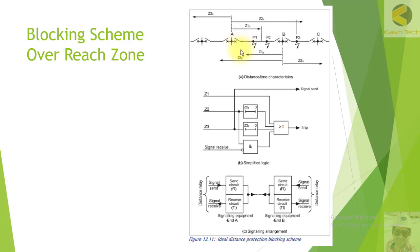For case 3, if the fault is in the reverse direction at F3, the relay at station A will again pick up in zone 2 and start the timer. The relay at station B will see that the fault is in the reverse direction — not in the forward direction — so it will send a blocking signal to the remote end not to trip. The relay at station A will not trip, and only the relay at station B monitoring the B-to-C section will trip in zone 1.